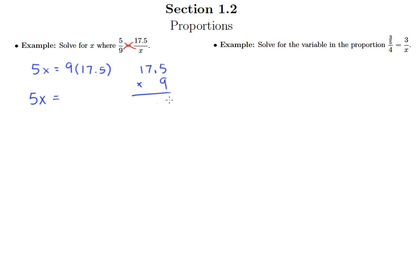So 9 times 5 is 45, 9 times 7 is 63, plus 4 is 67, and then 9 times 1 plus 6 is 15. Of course we have 1 decimal point, so the decimal point gets moved over 1, and so 9 times 17.5 is 157.5.